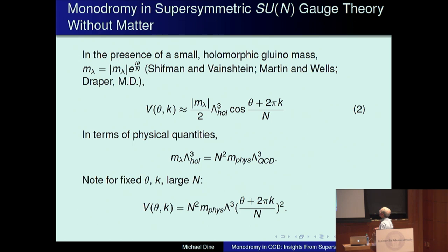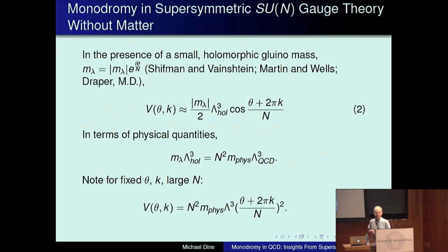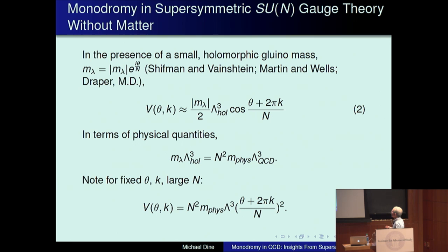Let me turn now to adding soft breakings. I want to go more directly to questions of theta dependence and the U1 problem in QCD, thinking about softly broken supersymmetric QCD as a large class of theories of which real QCD is a corner. Taking the pure gauge theory with a small holomorphic gluino mass — writing m_lambda as absolute value of m_lambda times e to the i theta over N to stress the connection of the phase of the gaugino mass to the theta parameter — we can write the potential.